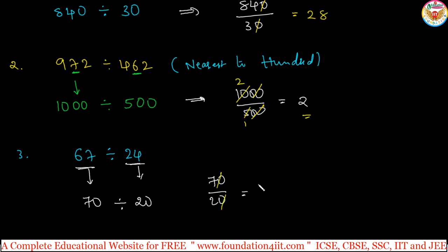0, 0 cancel. 7 divided by 2. Because 10 2s are 10 7s. 10 table cancel. 7 divided by 2, that is 3.5 if you convert into decimals.